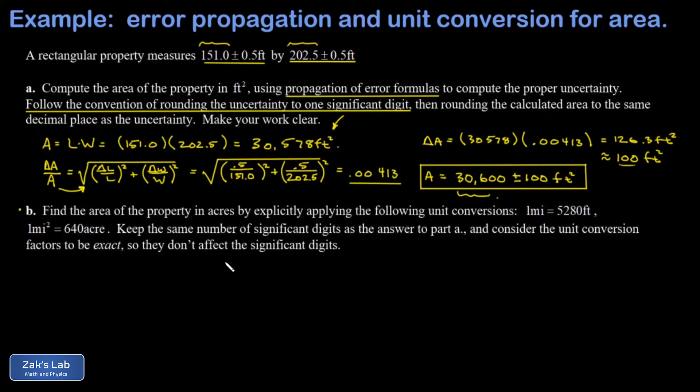In part B, we're doing a unit conversion now on this area of 30,600 square feet. And I'm asked to just keep the same number of significant digits as I got in the answer to part A. So I'm going to start with that number, 30,600. And then I need to get to acres, and the conversion that I have here is the number of acres in a square mile, and then I have the number of feet in a mile.